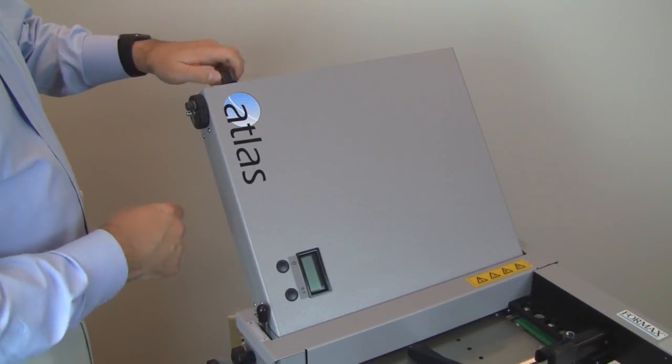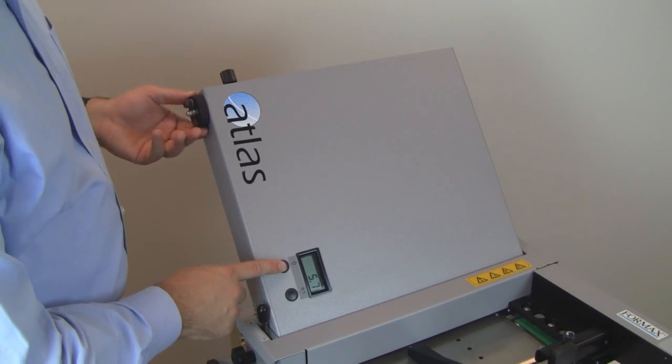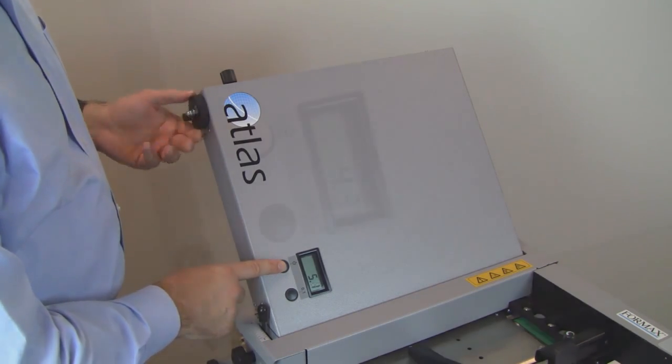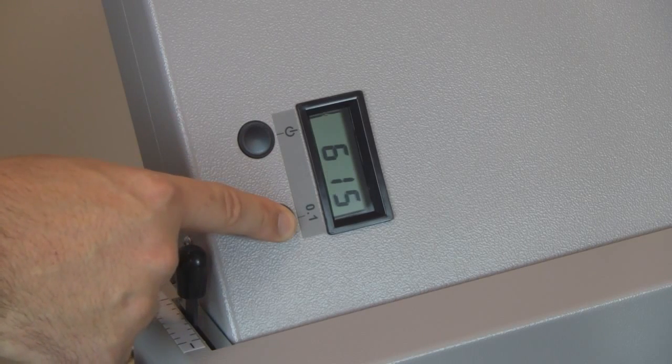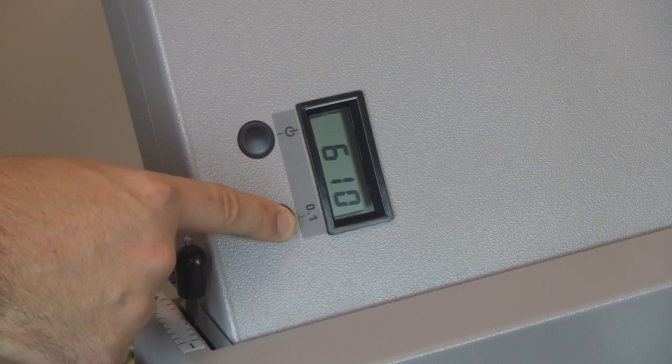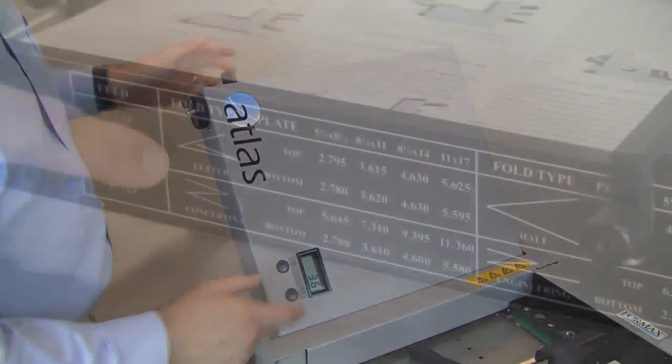Then press the LED power button. Turn the fold dial at the top of the fold plate to set the fold stop to 3.6. Then hold down the fine tune button and again turn the dial to match the 3.615 setting. Finally, lock the fold plate into position with the thumb screw.